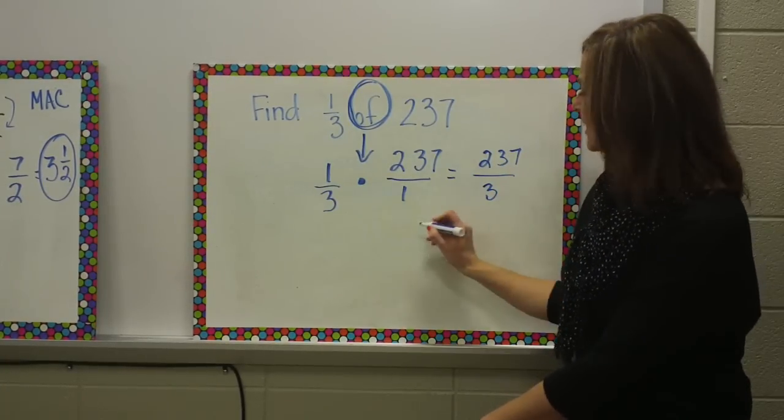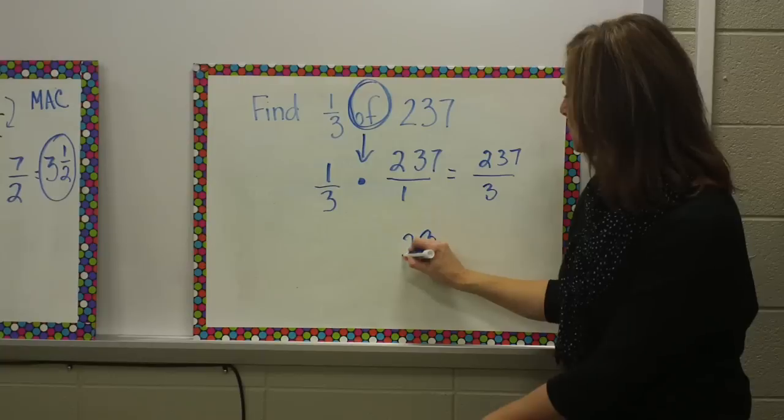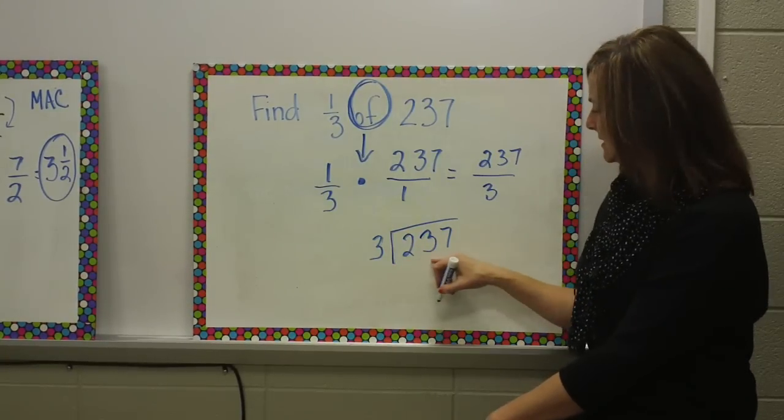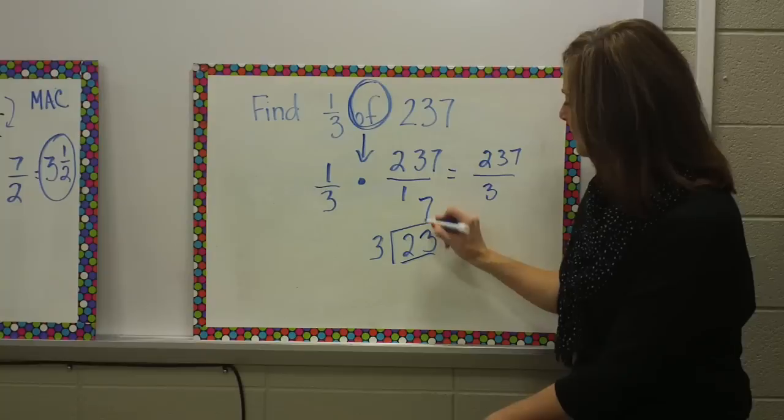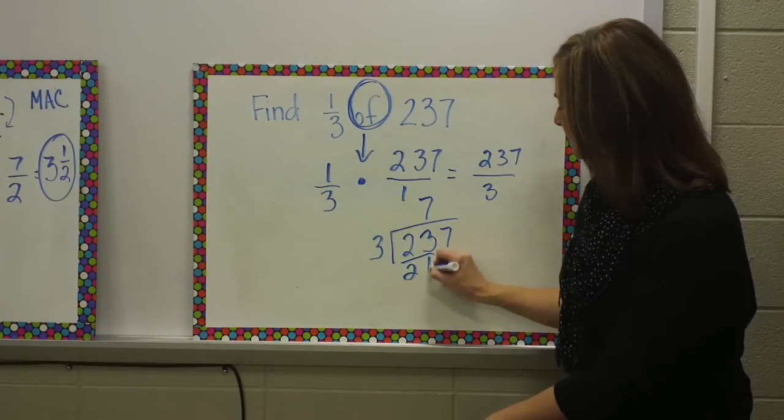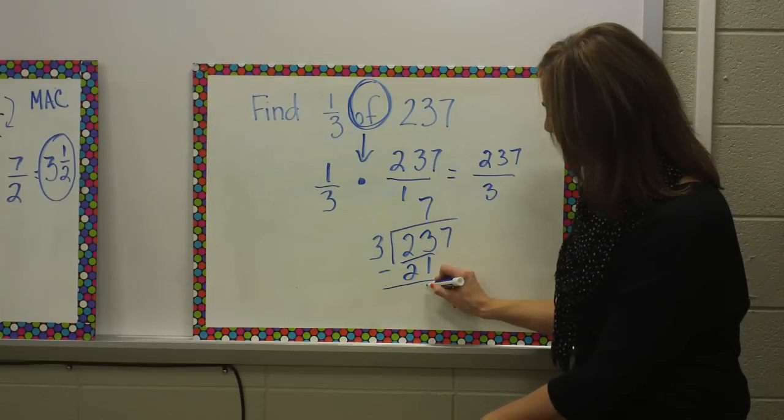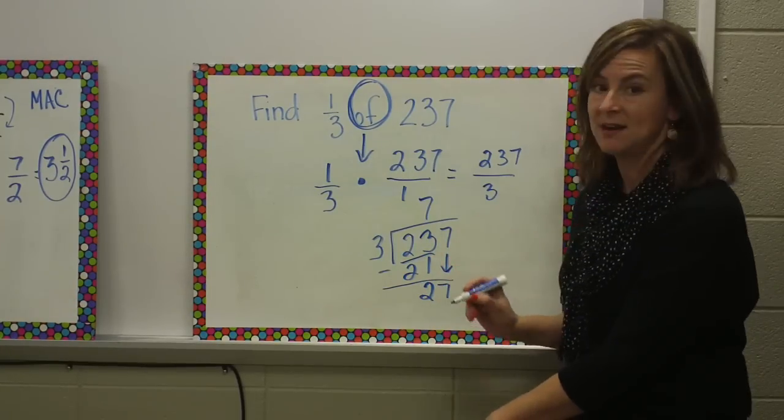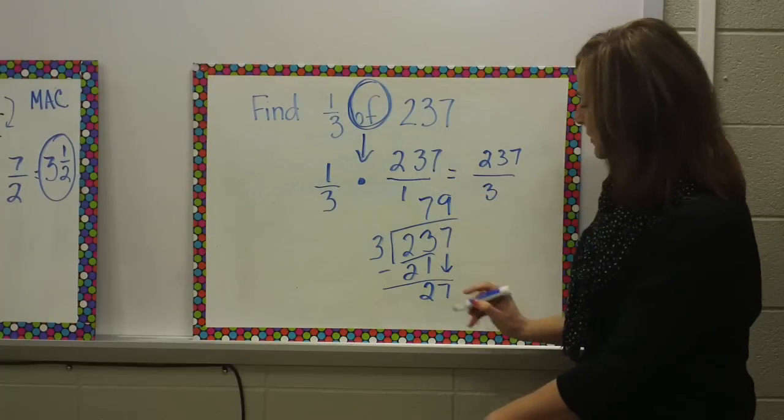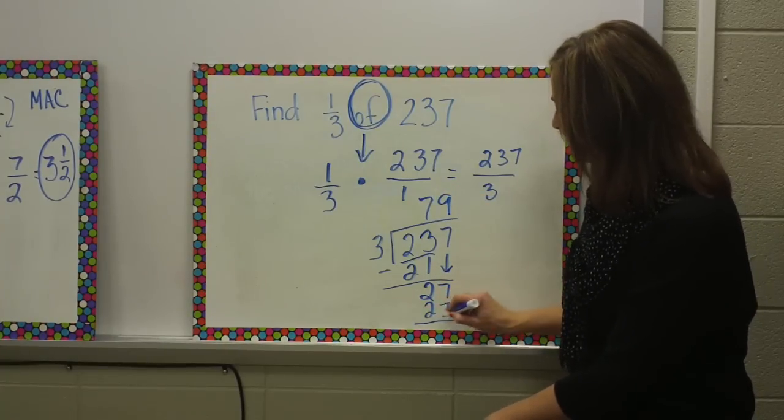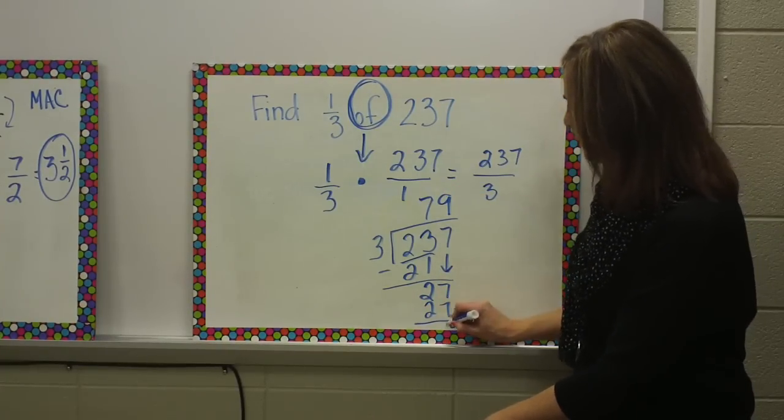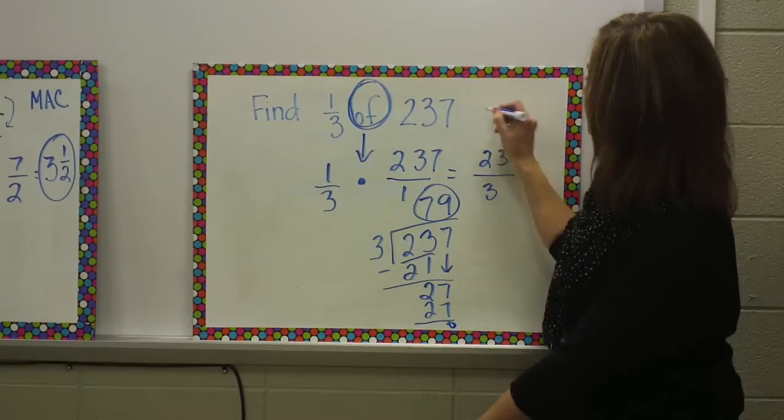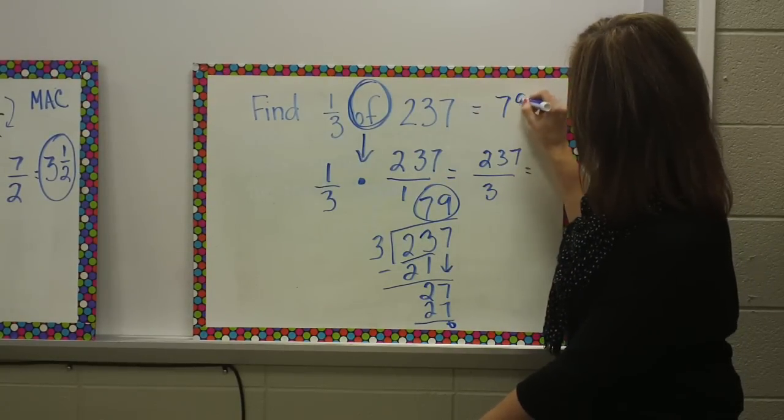Definitely an improper fraction. I'm going to take 237 divided by 3. I can get 7 threes out of 23, and I'm left with a 2. Bring down my 7, and I can get 9 threes out of 27. That tells me I have no remainder, that one third of 237 would be 79 students.